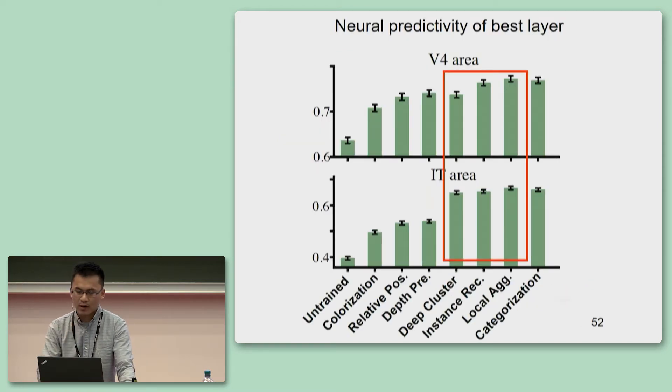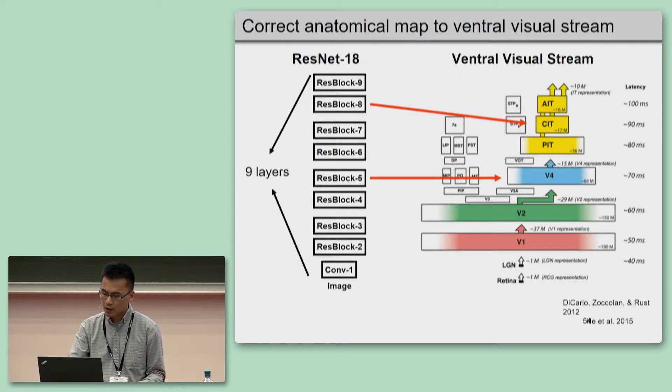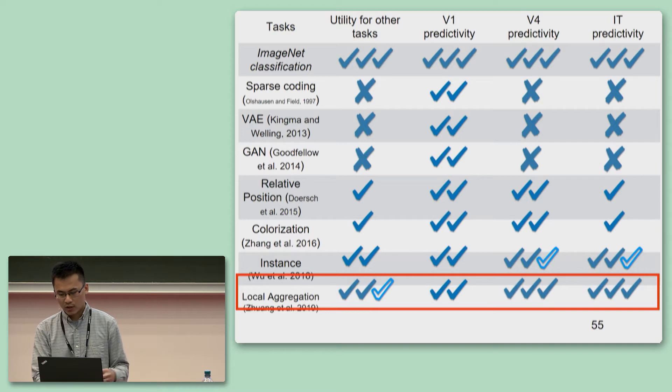So as indicated by their effectiveness in downstream tasks, these three tasks indeed also show high neural predictivity. Especially, local aggregation tasks shows performance that is very close or even slightly better than the categorization task. Moreover, the trained network by local aggregation also shows correct anatomical map to different areas. As shown in this plot, the V4 predictivity of this network peaks at an intermediate layer and its IT predictivity peaks at a higher layer. This nice anatomical map can also be shown in this figure. So going back to this table, it seems that the local aggregation is really about to end this story as it has strong categorization performance and also very good visual cortex predictivity.